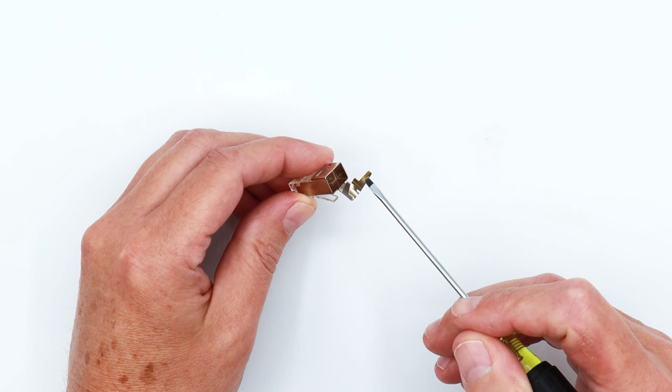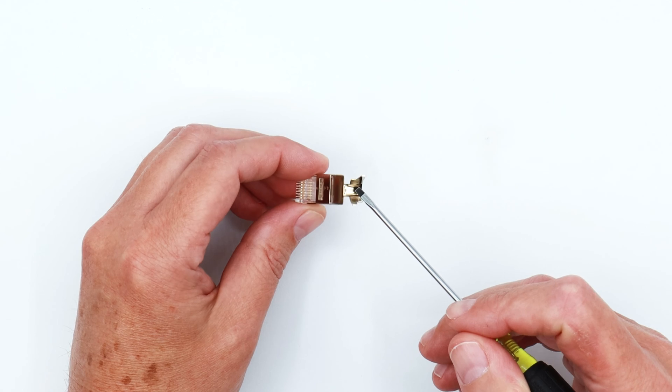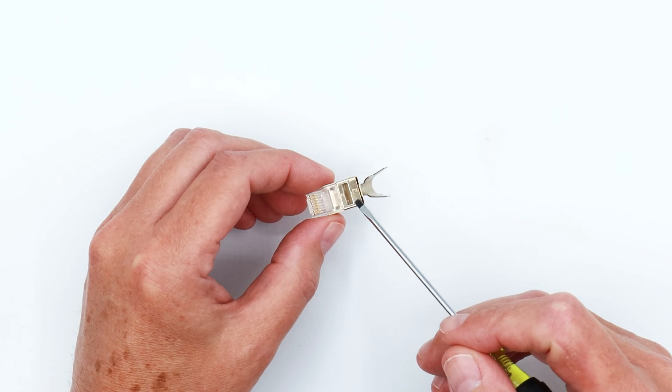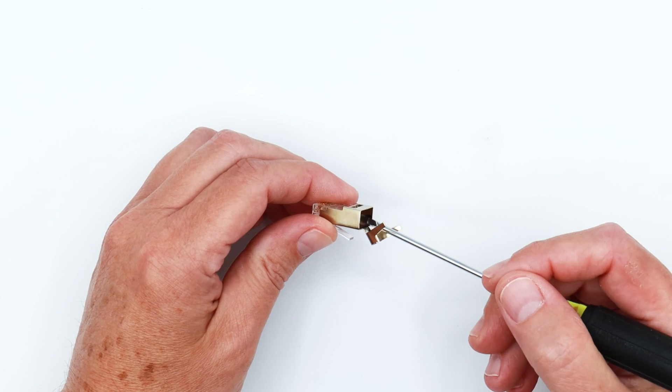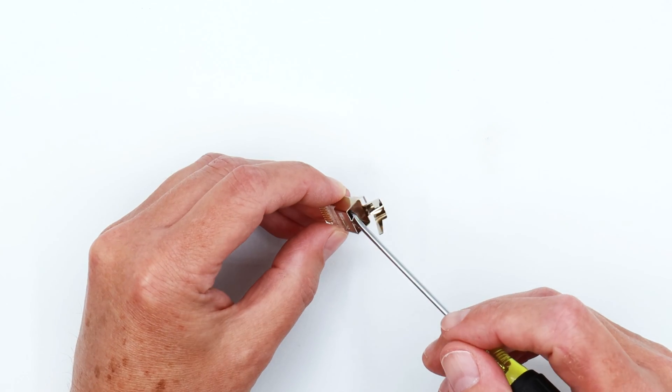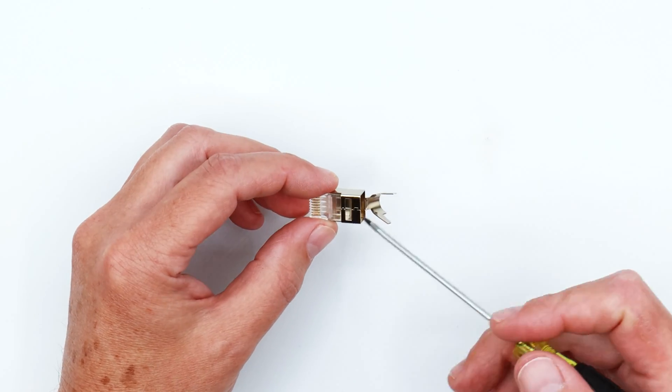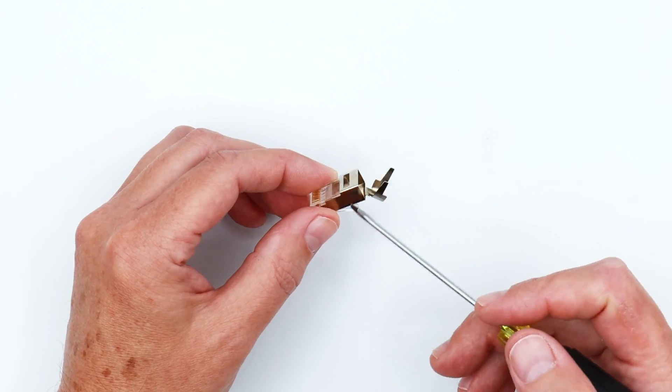The strain relief functions more at, well, I should say the external ground tab functions more as a strain relief for this particular plug because you can do the bonding on the inside because there's metal here rather than having to worry about bonding out here. So that makes it very versatile. There's lots of different ways to get the cable shield bonded to the hardware.